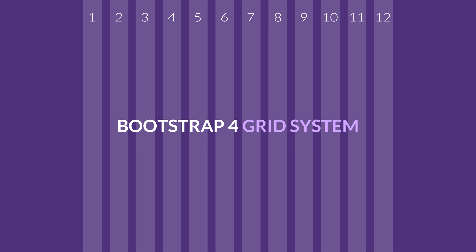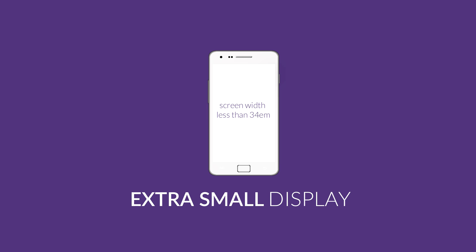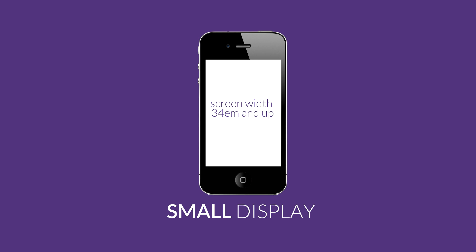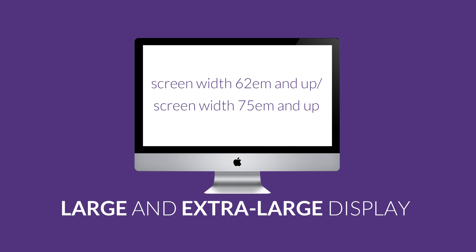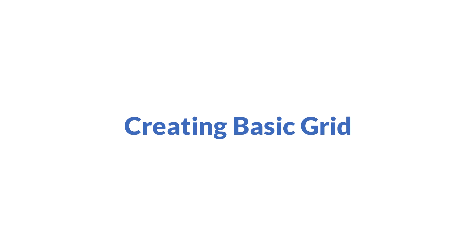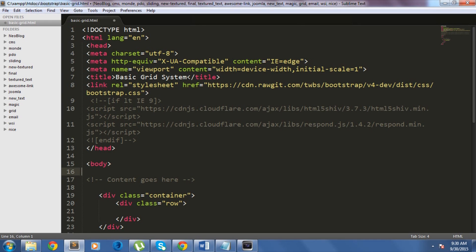There are major screen sizes that we can work on in Bootstrap 4. The first one is extra small display for super small screen mobile devices. The next one is small display for ordinary screen size mobile devices. The third one will be medium display for tablets, and the last one is large display for desktops. We will be discussing more on this along with the respective classes later on.